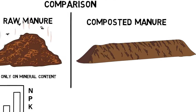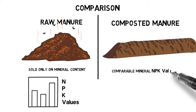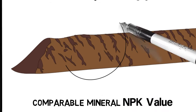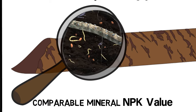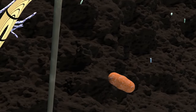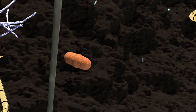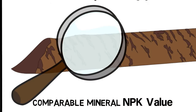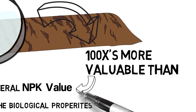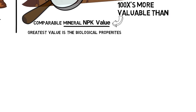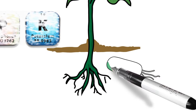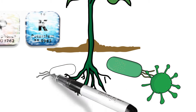While composted manure will have a comparable mineral N, P, K value, the greatest value of composted manure is the biological properties — the correct microorganisms of bacteria, fungi, protozoa, and nematodes that are transferred into a soil that needs proper restructuring of its biological field. That is a hundred times more valuable than the mineral content from NPK, because within a few years your mineral content is depleted, whereas a proper biology inoculation can last for decades.